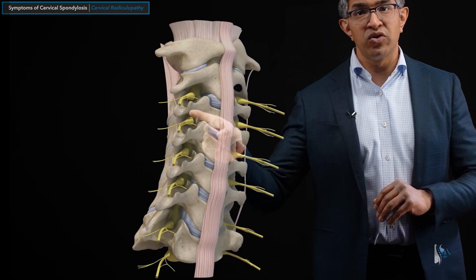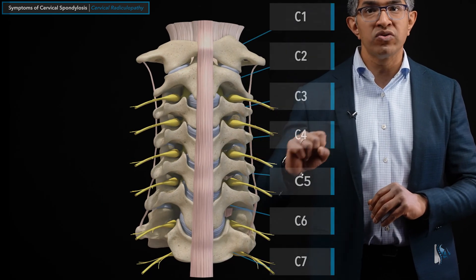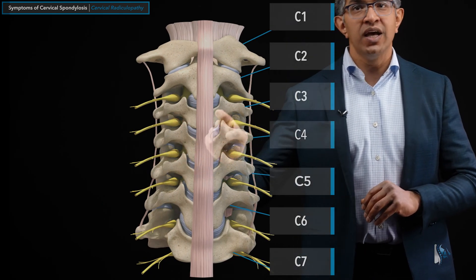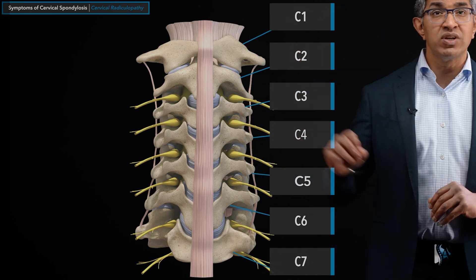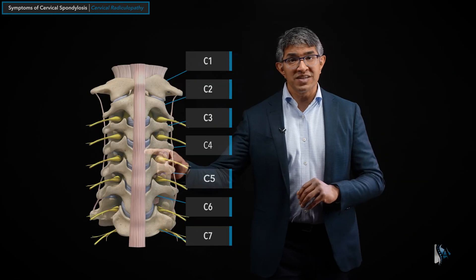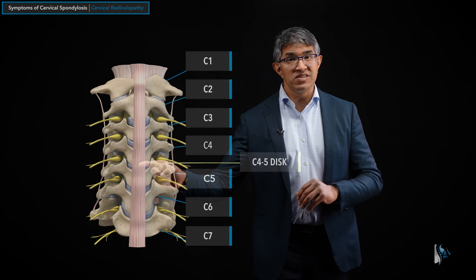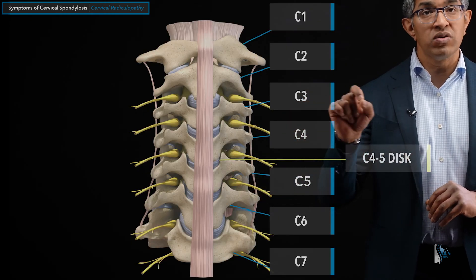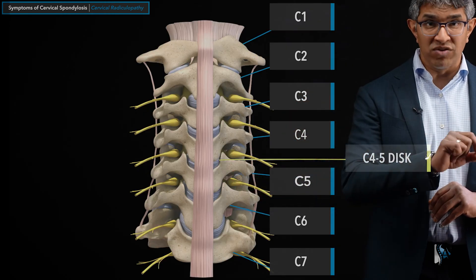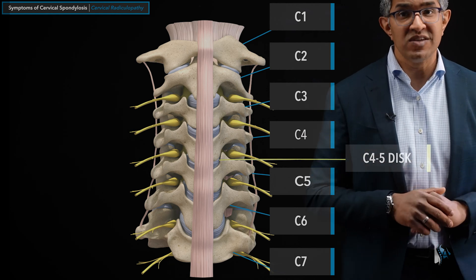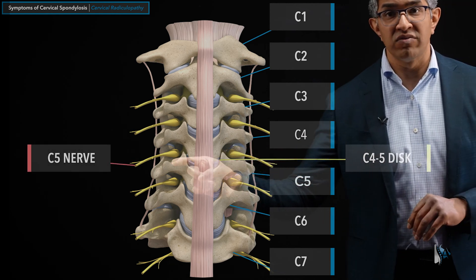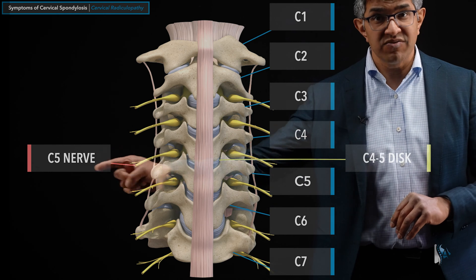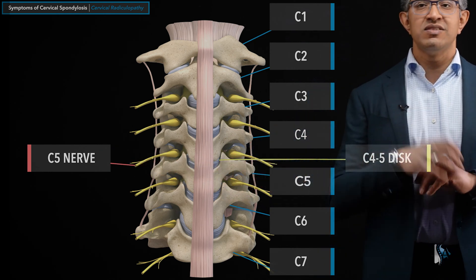The bones are numbered from one at the top to seven at the bottom. The nerve comes out of a small window called the neuroforamen, and there's one on the right side and one on the left side at every level. If you look at the disc between C4 and C5, that's called the C4-5 disc. The nerve that comes out at C4-5 is the C5 nerve — this is the right-sided C5 nerve, and this is the left-sided C5 nerve.